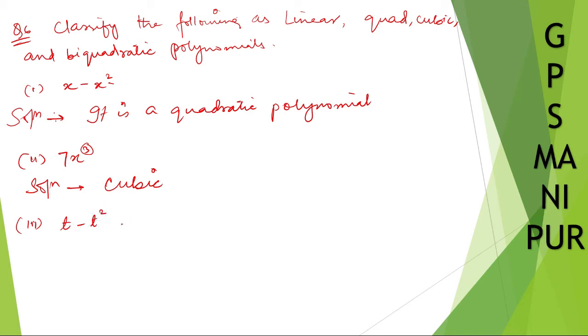Room number 3: t minus t square minus 3. The highest power is 2, so it is quadratic.